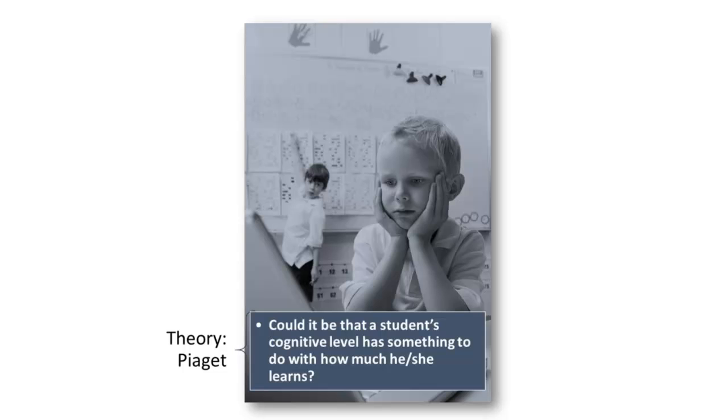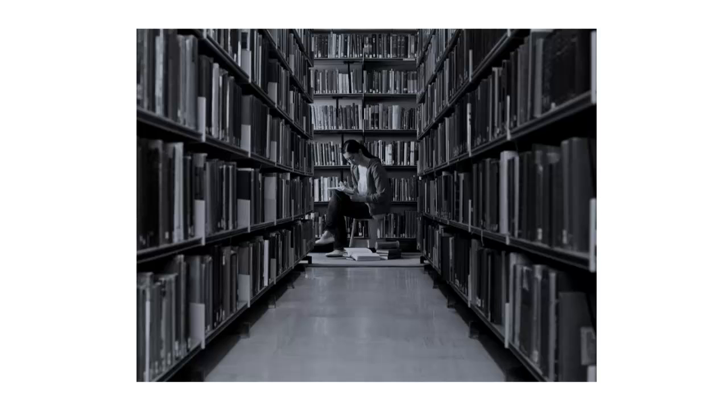She asks, could it be that a student's cognitive level influences their learning via the type of questions they're asked? Kate heads back to the library to do some more research. She searches the literature on cognitive development and its relationship to achievement, looking for research that uses Peter Jay as a theoretical framework. As she dives deeper into the literature, she recognizes two themes that emerge.